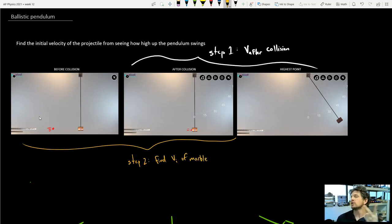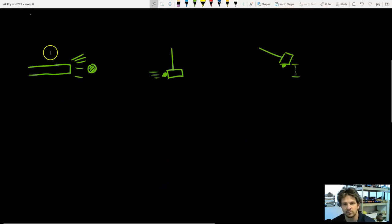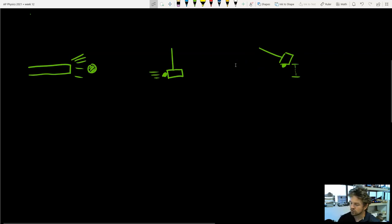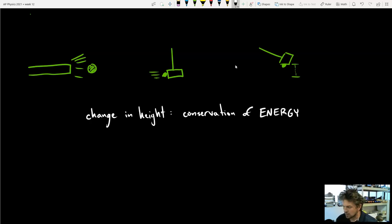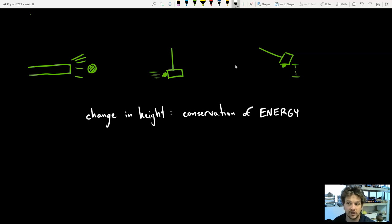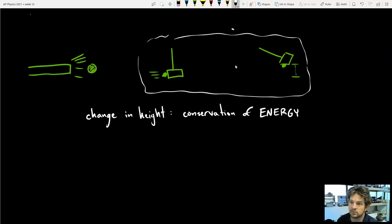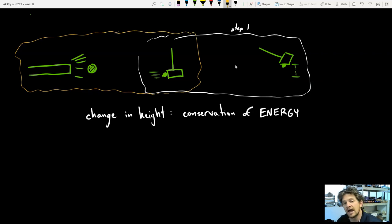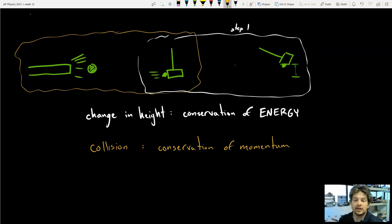There are two really important things happening. There is a change in height, which tells us there's a conservation of energy problem — it goes from kinetic energy to gravitational potential energy. The other piece is the collision, which means we're going to look at it through the lens of conservation of momentum.